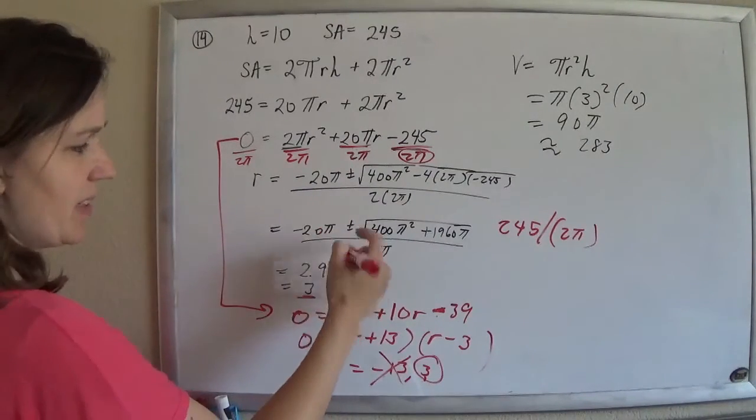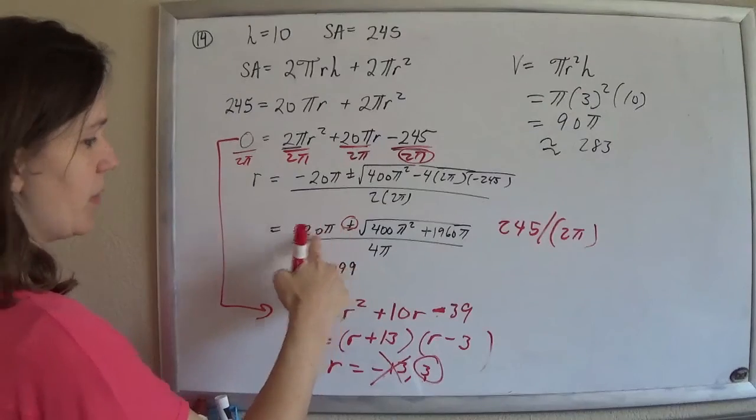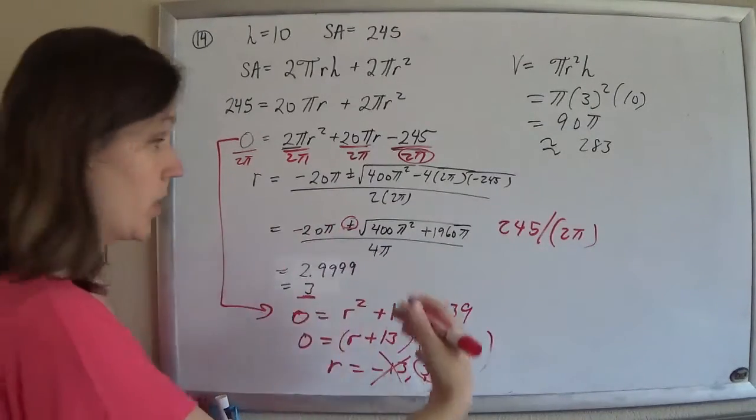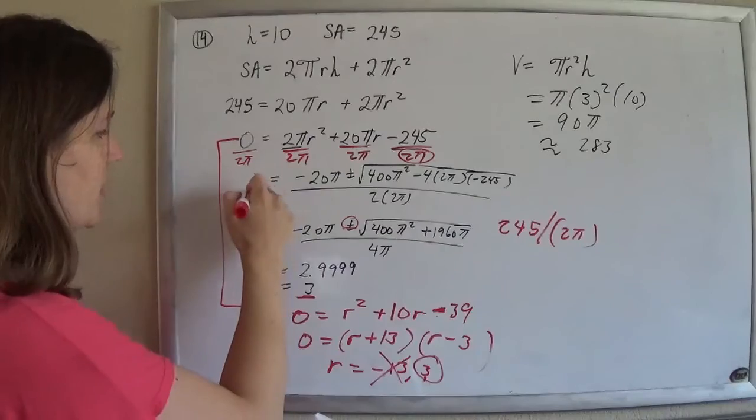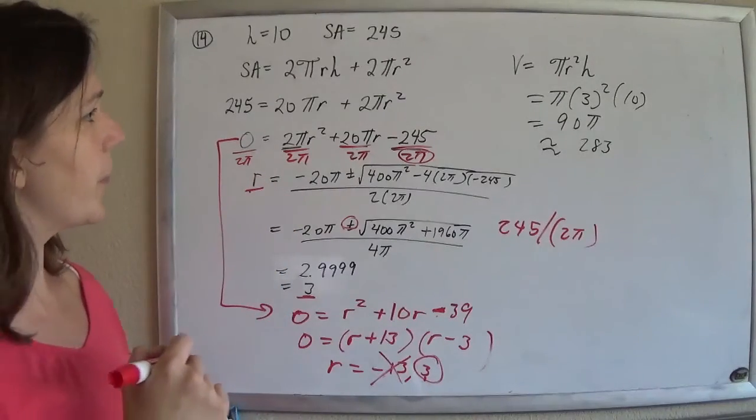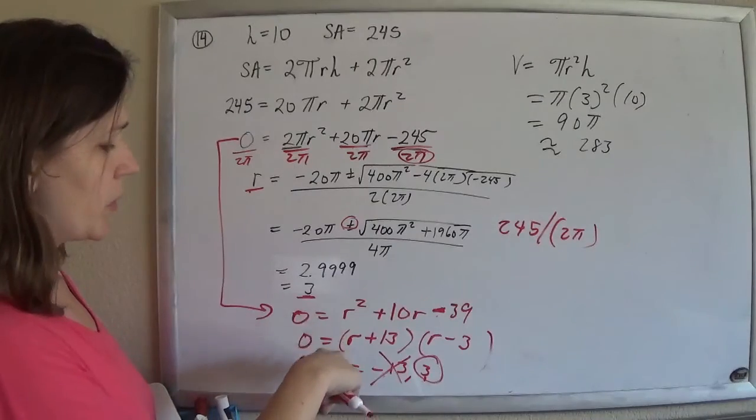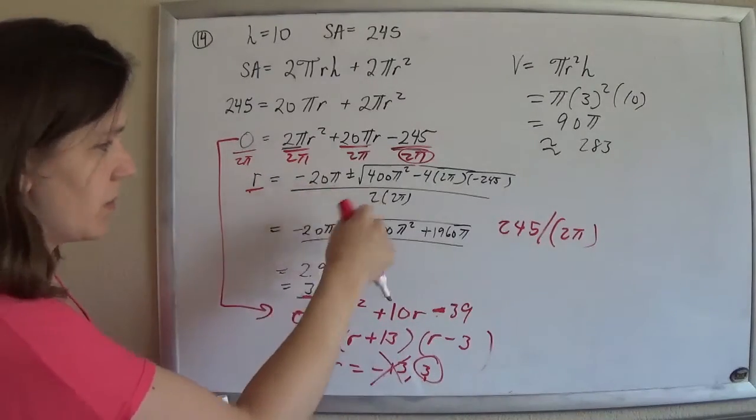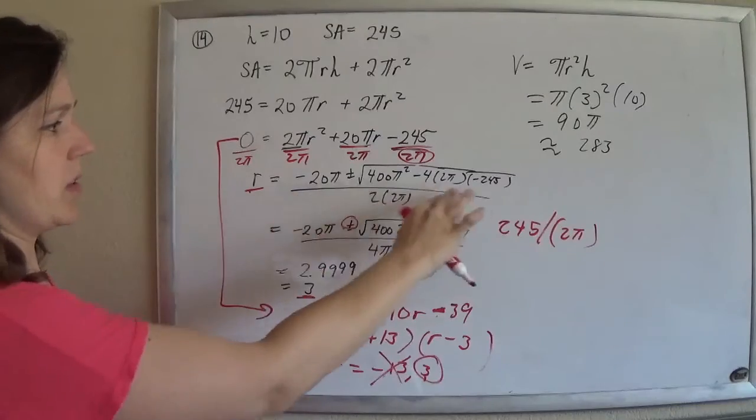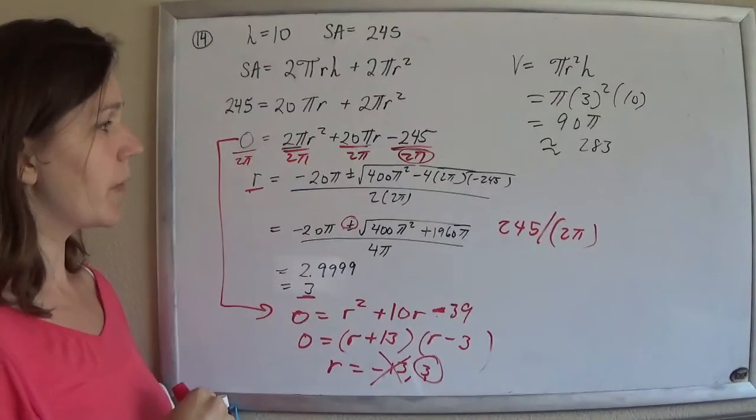Oh, and when I plugged in this on my calculator, I only did the positive one, because if I did negative 20 minus something, I'm going to get negative, and that's not going to be a possible radius for a real life thing. So that's what the back of the book was doing, but I wouldn't have done that. I would have just bite the bullet and just do your quadratic formula.